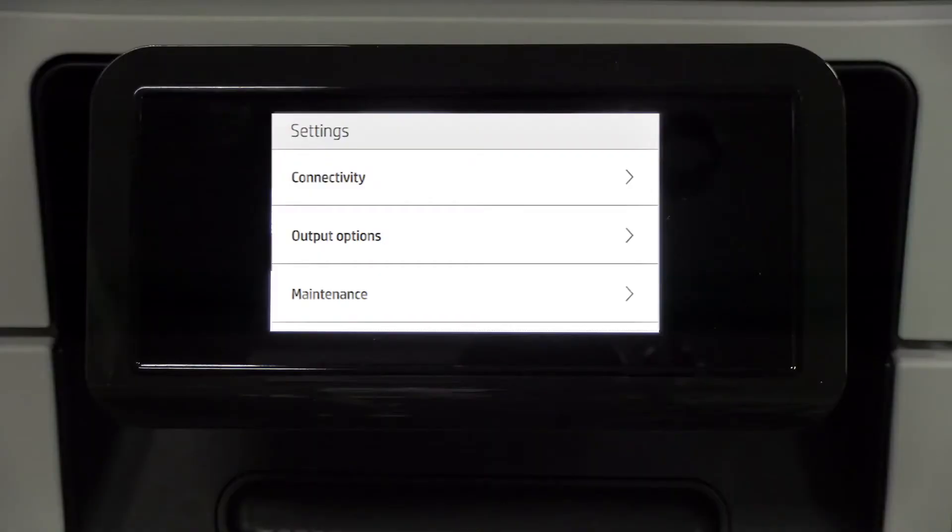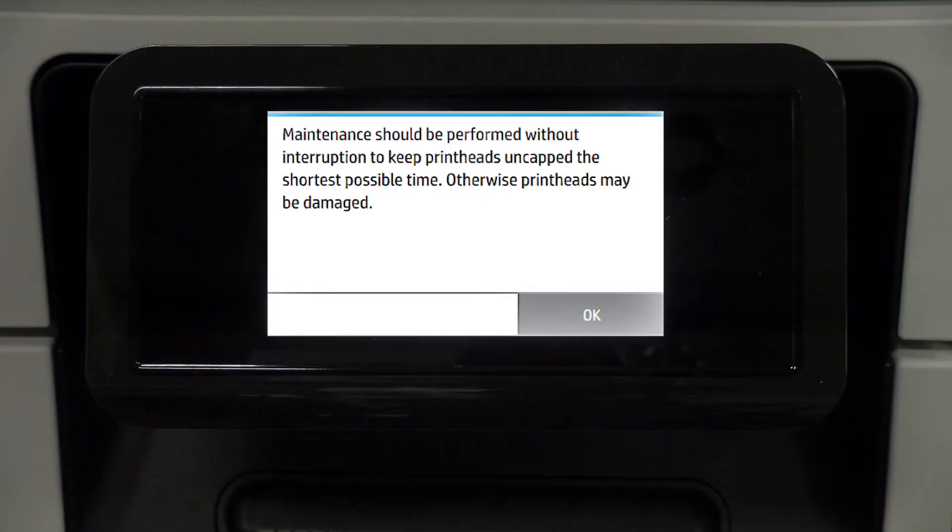Go to the front panel, tap the settings icon, then tap preventive maintenance. How to clean the encoder strip: maintenance should be performed without interruption to keep printheads uncapped the shortest possible time, otherwise the printheads may be damaged.